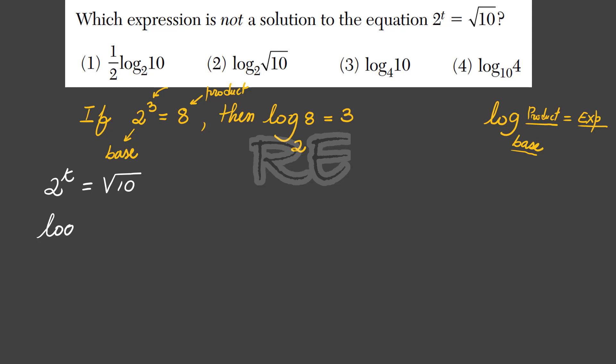Therefore, 2 to the t equals square root of 10 means log base 2 of square root of 10 equals the exponent t. So the first solution we come up with is option 2. We must cross out 2. We're looking for the expression which is not a solution.